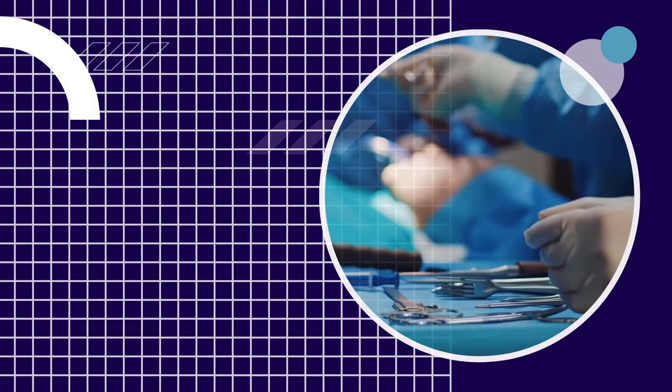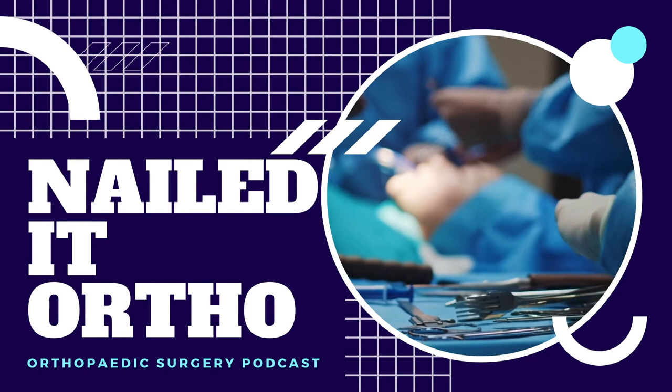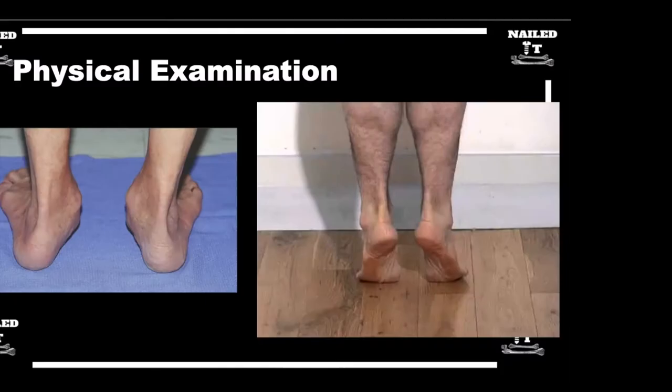You are now listening to Nailed It, the orthopedic surgery podcast. What would be some things that you would see on radiographs — on x-rays — that would point out to you that this is a flat foot?